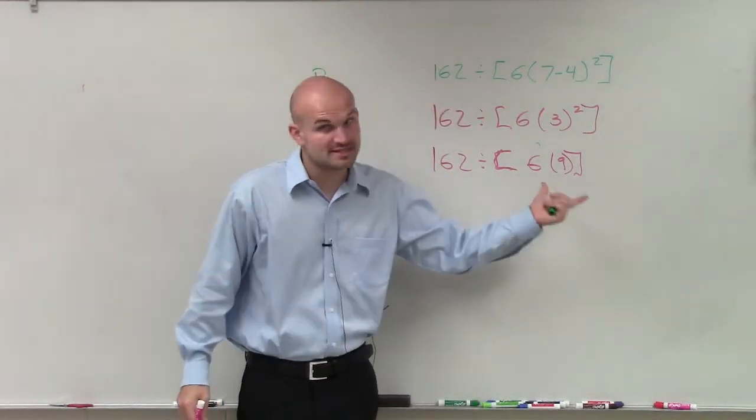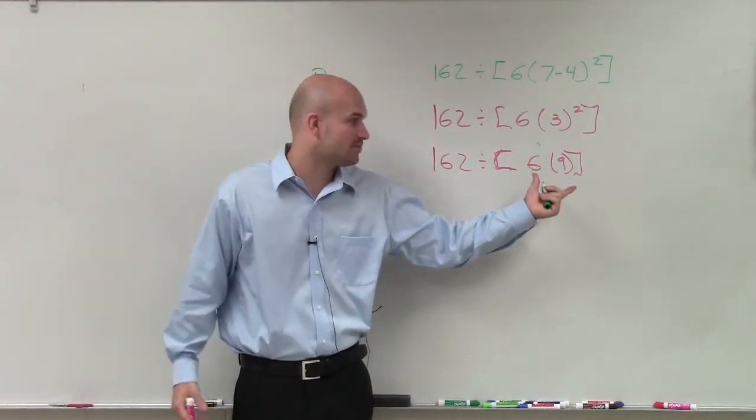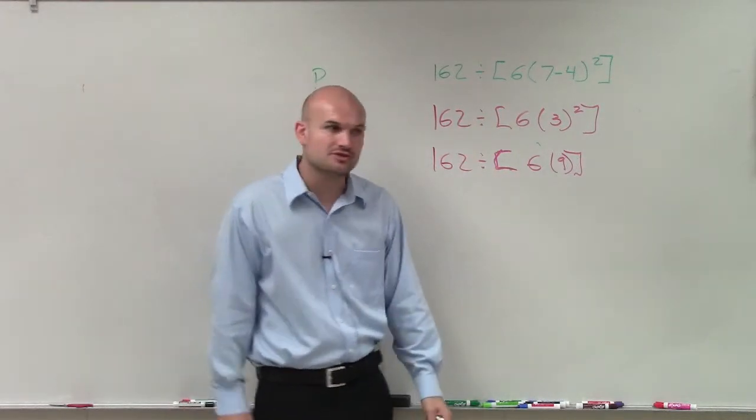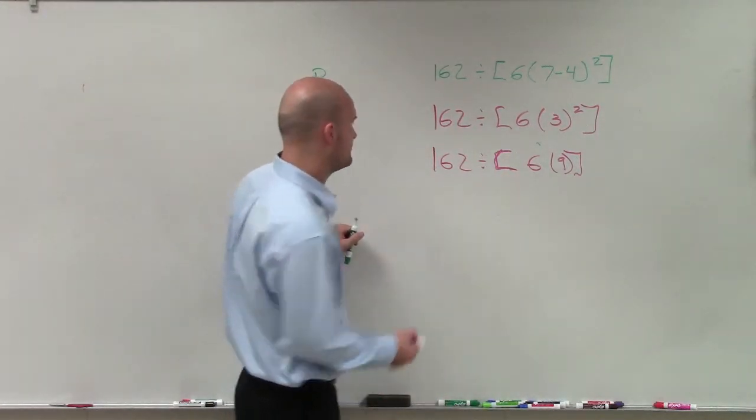Again, we still need to work until there's no more operations inside this bracket. 6 times 9 is going to be 54.